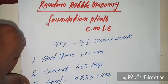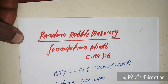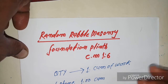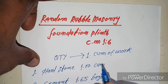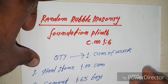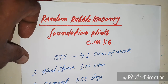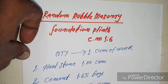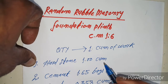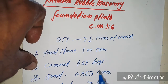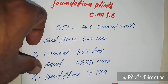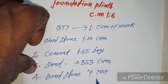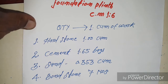तो friend, यह रही जानकारी। Random Rubble Masonry Foundation Plinth, ratio 1:6, quantity one cubic meter of work। एक cubic meter बनाने में इतना material चाहिए: Hard Stone — 1.00 cubic meter, Cement — 1.65 bags, Sand — 0.353 cubic meter, Bond Stone — 7 nos।